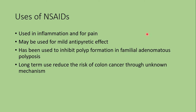So the uses of NSAIDs are: they are used in inflammation as the name implies, and also they are used for pain. They may be used for a mild antibiotic effect, and have been used to inhibit polyp formation in familial adenomatous polyposis. Finally, long-term use reduces the risk of colon cancer through an unknown mechanism.